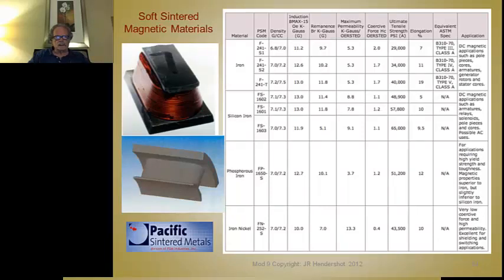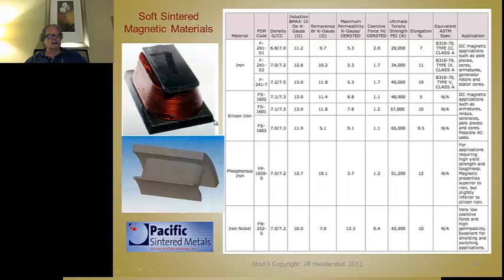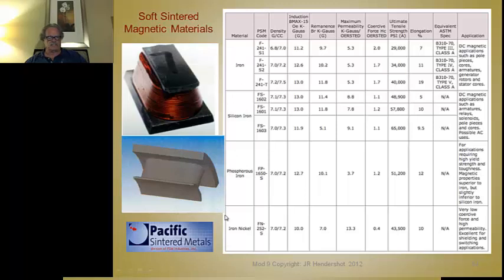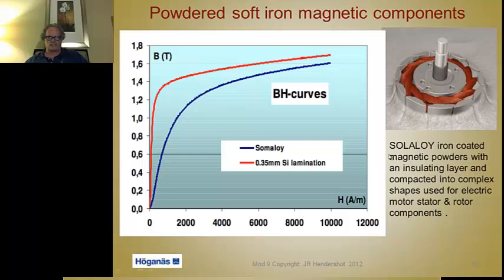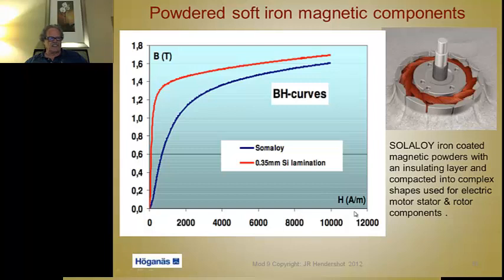Here's a summary of the different materials. Pure iron is used in sintered parts — these pictures show sintered pole pieces, one with coils wrapped around it. These sintered pole pieces replace laminations; you put a bunch together to make a stator. There's also silicon iron, phosphorus iron, and nickel iron. All of these grades are available from a company called Hoeganaes, which makes powdered materials that can be sintered into these shapes. Here's an example of an actual stator sintered from a trade name material called Somaloy, made by Hoeganaes, a Swedish company.